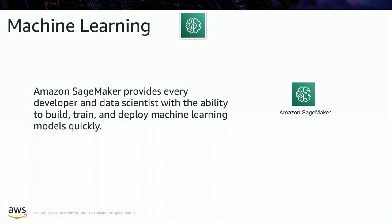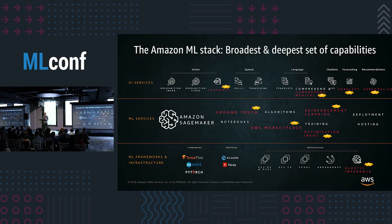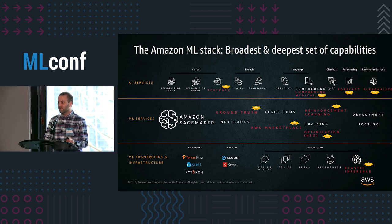Amazon SageMaker itself provides the ability for every developer and data scientist to build, train, and deploy machine learning models quickly and at scale. It consists of a variety of features, including ground truth, notebooks, algorithms, the AWS Marketplace for machine learning, reinforcement learning, training, optimization, deployment, hosting, and more.